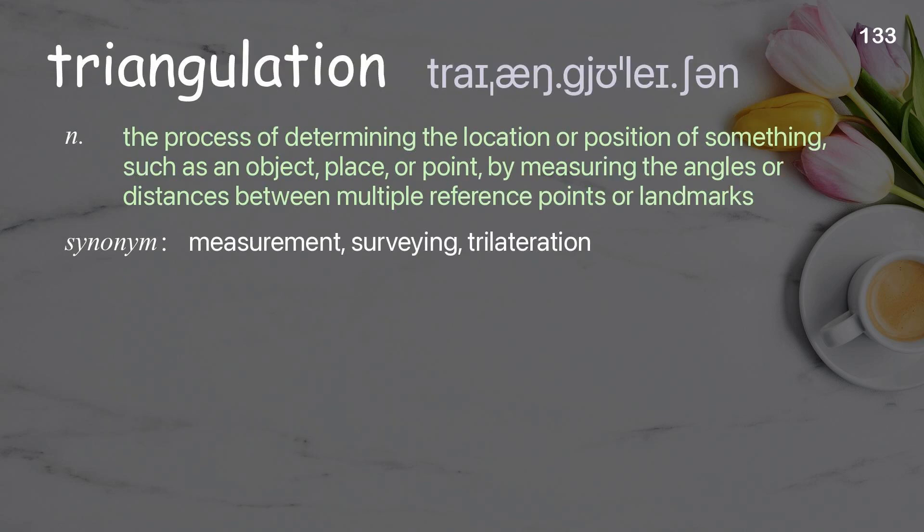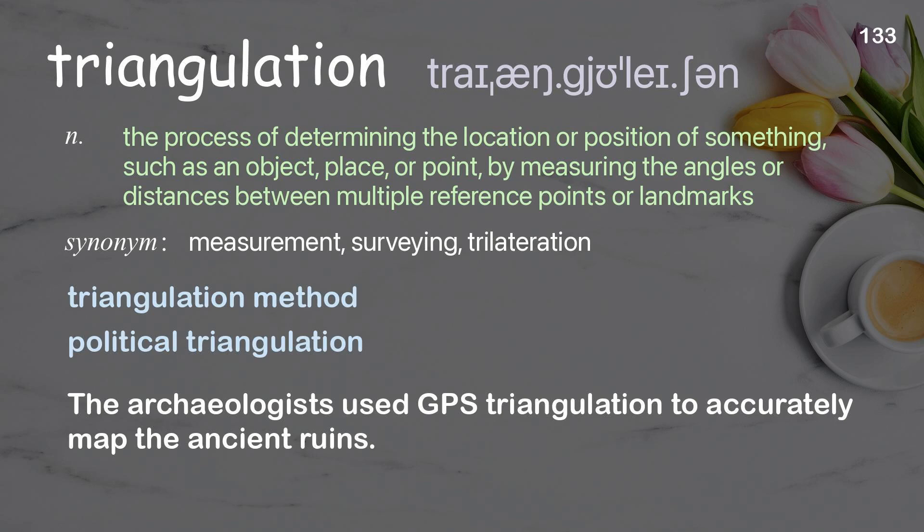Triangulation: the process of determining the location or position of something, such as an object, place, or point, by measuring the angles or distances between multiple reference points or landmarks. Examples: triangulation method, political triangulation. The archaeologists used GPS triangulation to accurately map the ancient ruins.